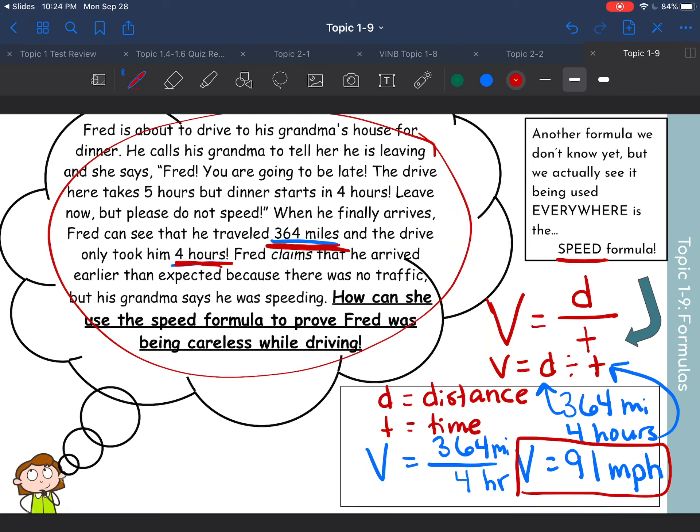So Fred went 91 miles per hour. Do you think the speed limit on that road was 91 miles per hour? It was not. So Fred was definitely speeding. And that's how the grandma knows that he was speeding. Because his distance and his time it took him, you can find out that he traveled 91 miles per hour.